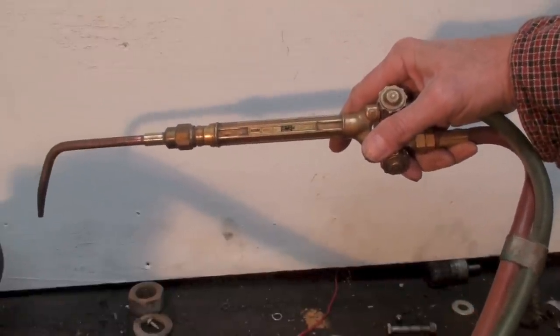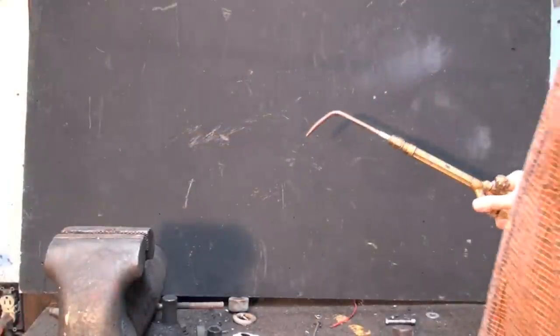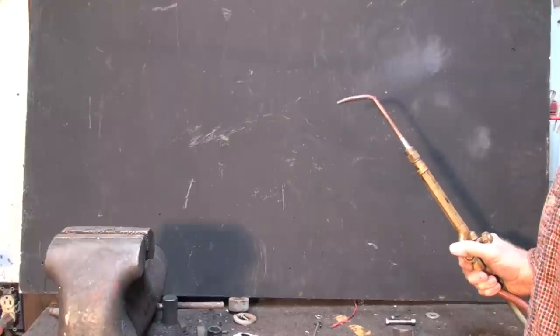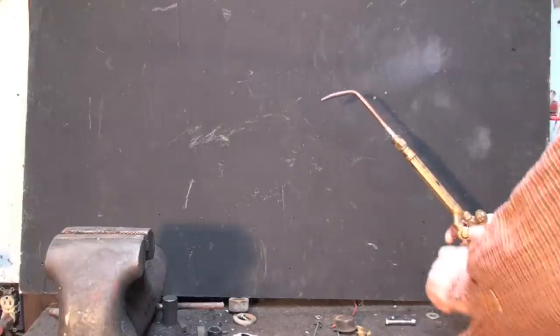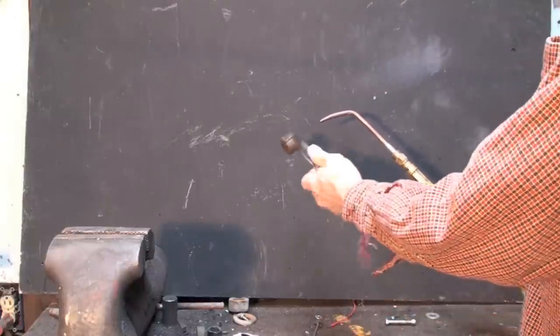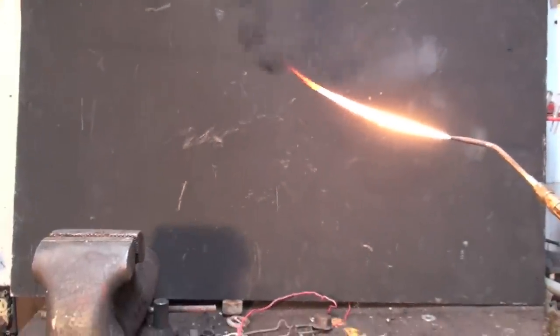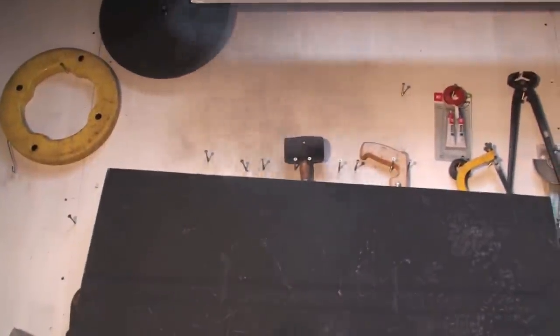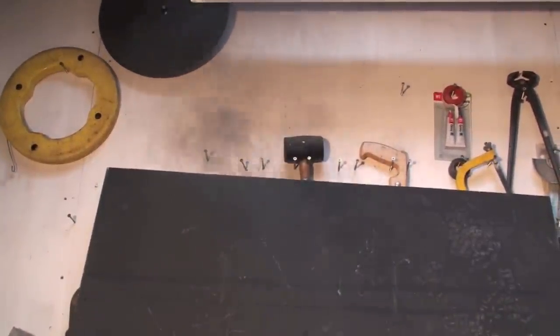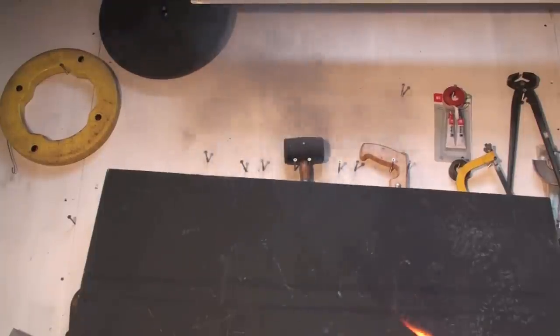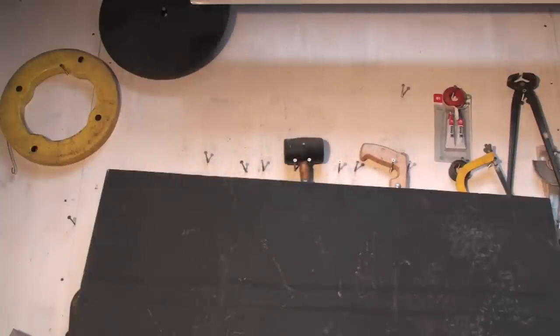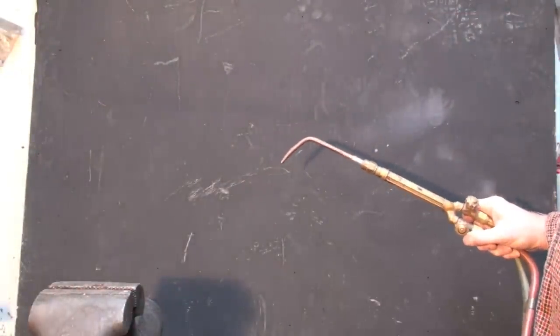Okay, now we're gonna go over a few things about lighting this torch off. Now you can light it this way if you want. If you look up above, see all that smoke? You're gonna have little bits of flaky soot everywhere. Shut that off. That's not the way to light the torch.